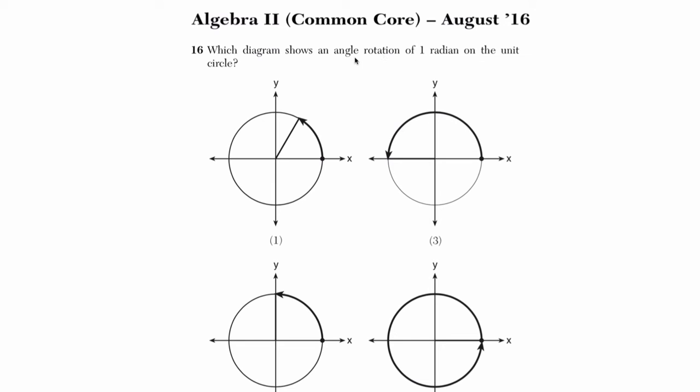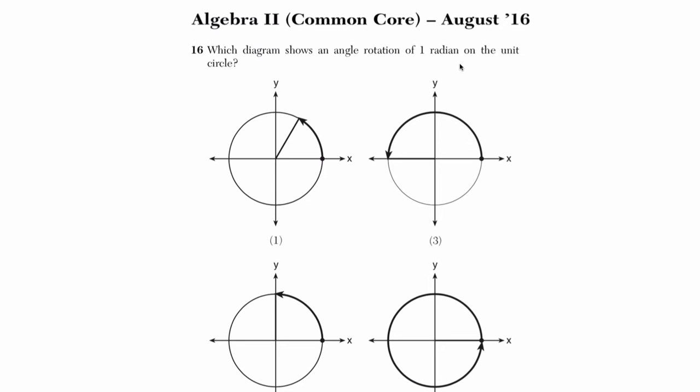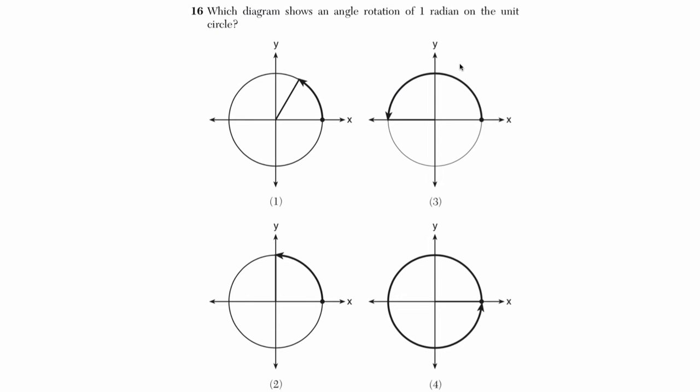Okay, so it says which diagram shows an angle rotation of one radian on the unit circle? Remember what a radian is. Now, it's a way of measuring angles based on the radius of a circle.